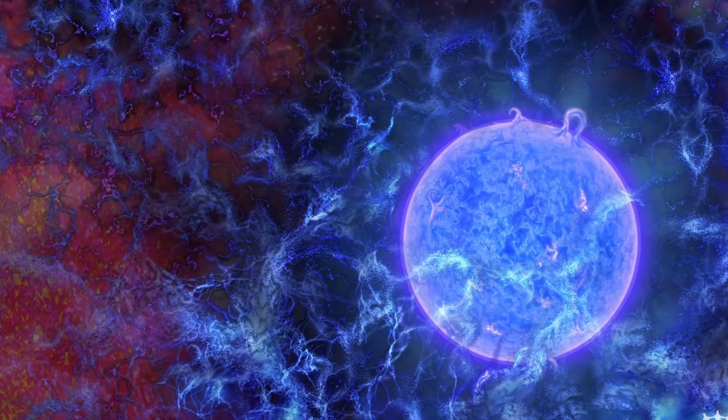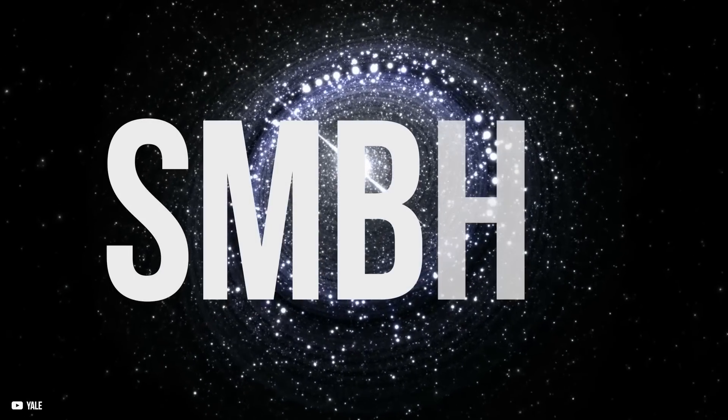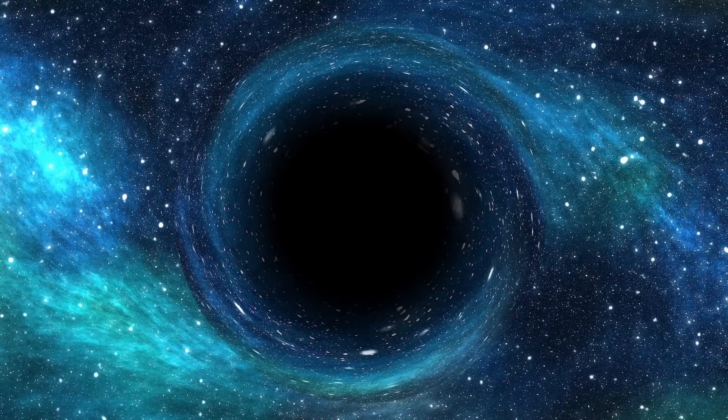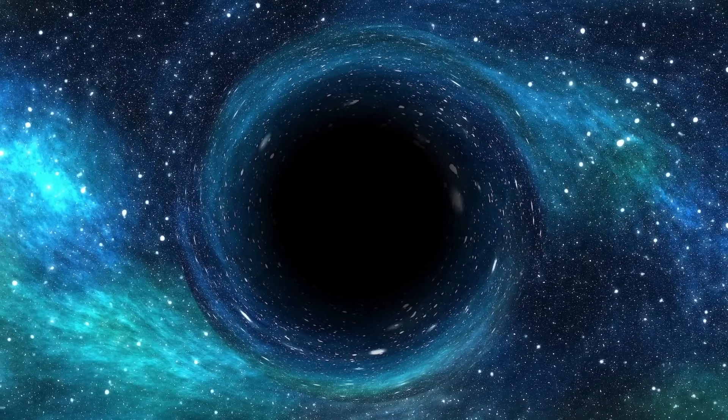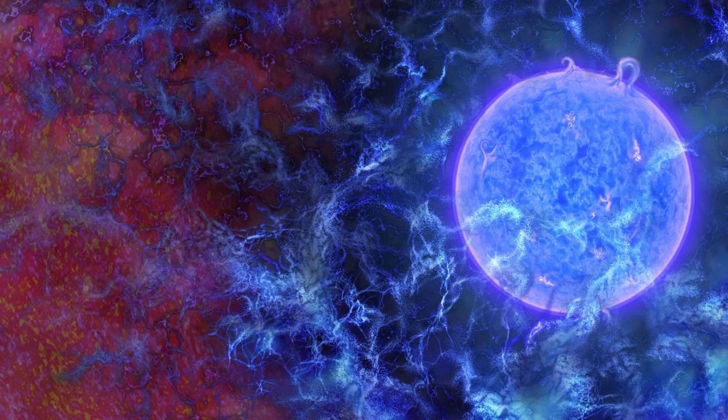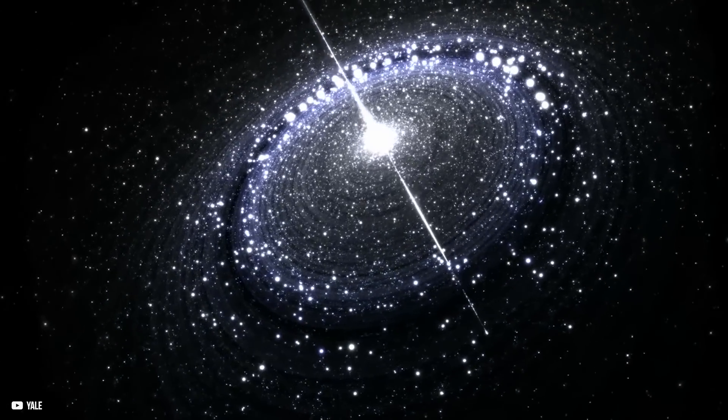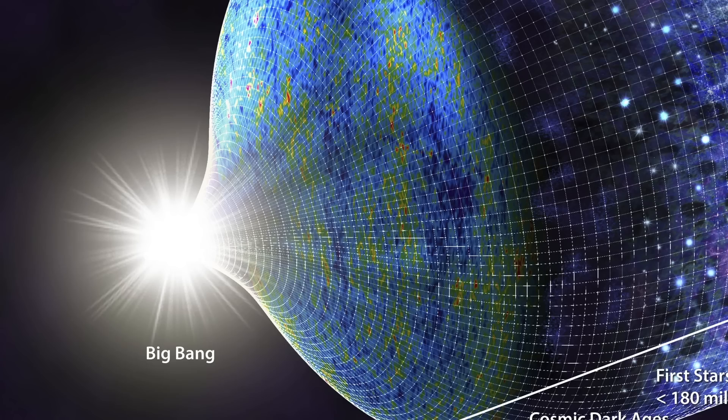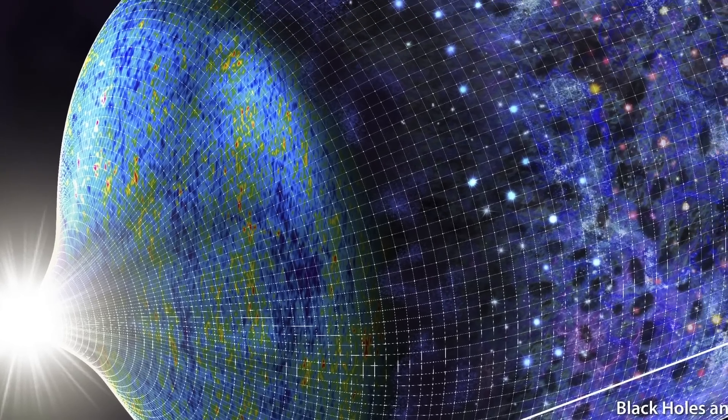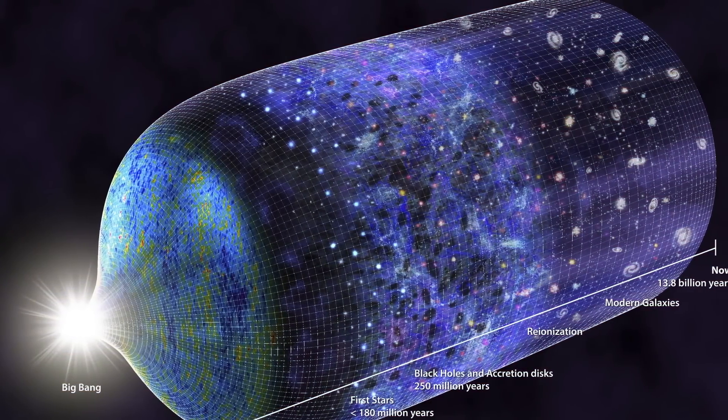They discovered that by looking for the first stars, galaxies, and supermassive black holes in the cosmos, primordial black holes may have had a significant part in the creation of the universe. They said that their findings suggest that stars, galaxies, and supermassive black holes emerge throughout the course of cosmic history very swiftly, possibly too quickly to be explained by the processes of creation and development seen in the universe as we know it.